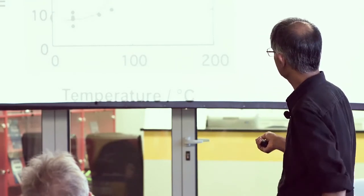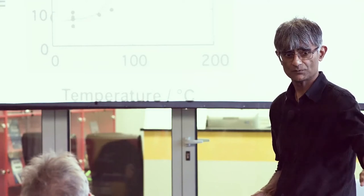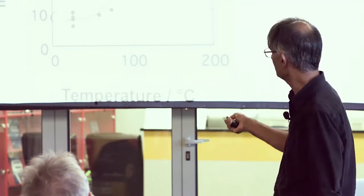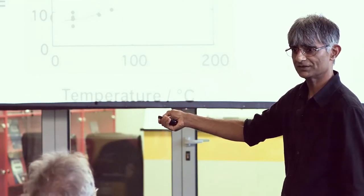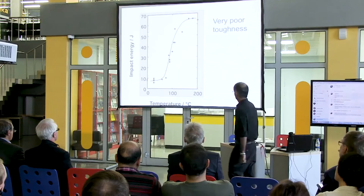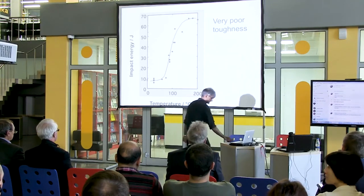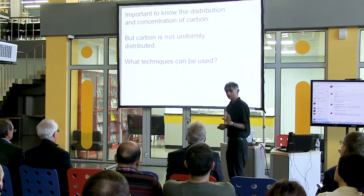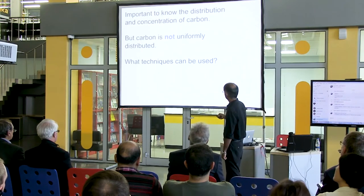We do not have a uniform distribution of carbon. The carbon that is partitioned stabilizes the austenite near the bainite plates, not far away from it. Therefore, the toughness of that microstructure is very poor. You can see that the impact transition temperature — the transition from ductile to brittle — is well above room temperature. You really want this to be at minus 100 degrees centigrade. We have a non-uniform distribution of carbon and we need to know this distribution.